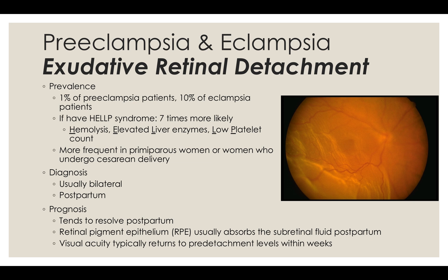Preeclampsia or eclampsia can precipitate exudative retinal detachment. Accumulating fluid separates the neurosensory retina from the retinal pigment epithelium without a hole, tear, or break. 1% of preeclampsia patients and 10% of eclampsia patients experience exudative retinal detachment. If they have HELLP syndrome — a condition both associated with and separate from preeclampsia, characterized by hemolysis, elevated liver enzymes, and low platelets — they are 7 times more likely to suffer exudative retinal detachment. The diagnosis is usually made bilaterally and postpartum. On the right is a fundoscopic image illustrating an exudative retinal detachment. Prognosis is usually good; visual acuity resolves completely within weeks postpartum.